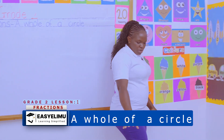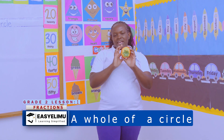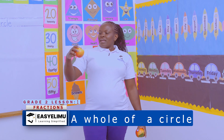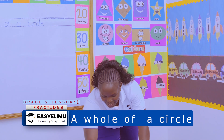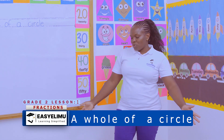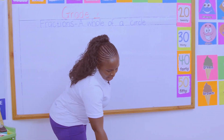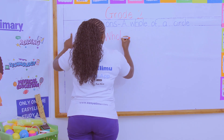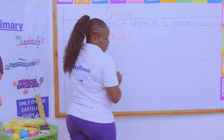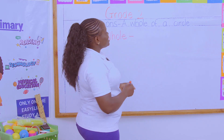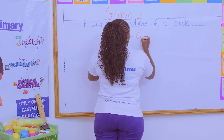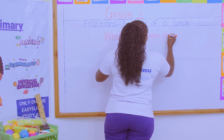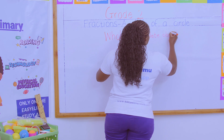How do we call something that does not have any missing parts — like this tomato, like this apple, like this orange? It doesn't have any missing parts. We call them a whole. A whole is a complete object, meaning it does not have a missing part.